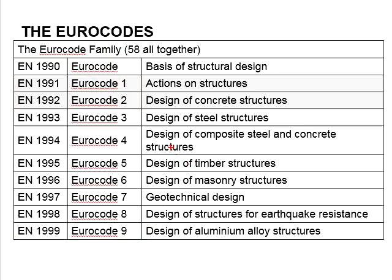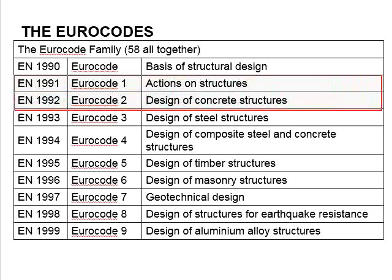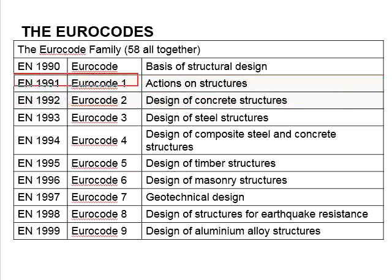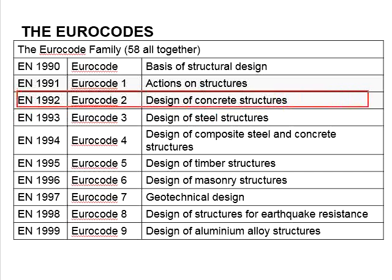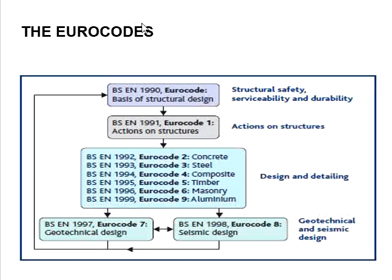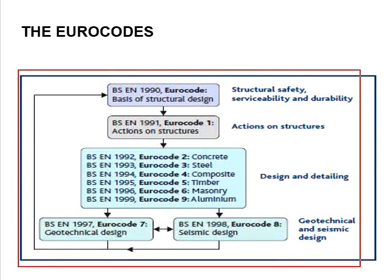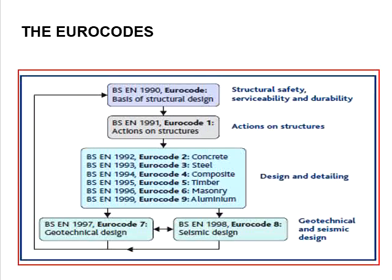The two codes that you are going to refer extensively in RC design are Eurocode 1 and Eurocode 2. Eurocode 1 is mainly for determining the actions and forces acting on structures, and Eurocode 2 is mainly for reinforced concrete design.